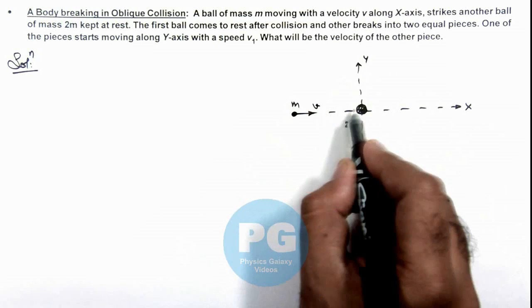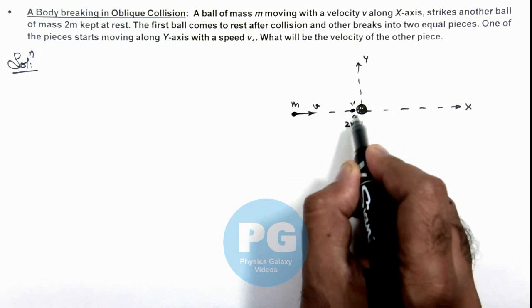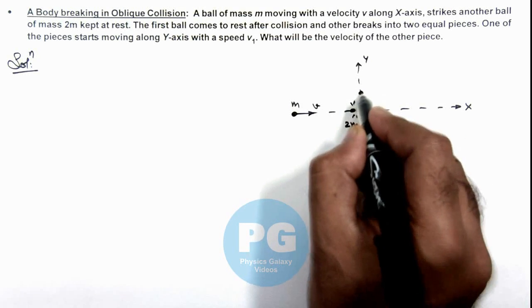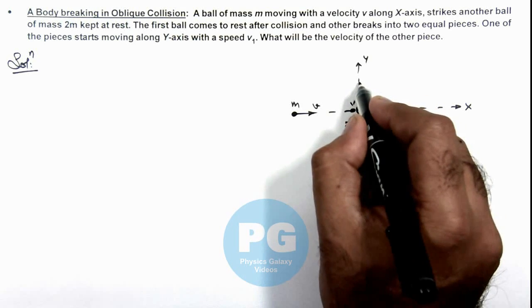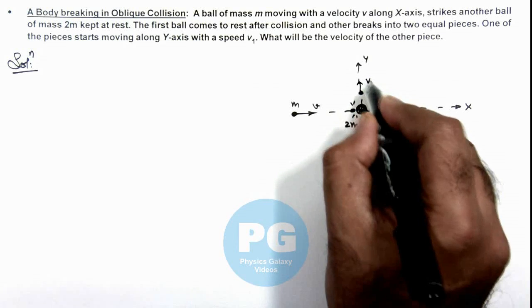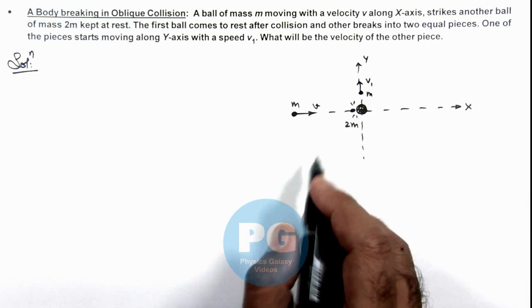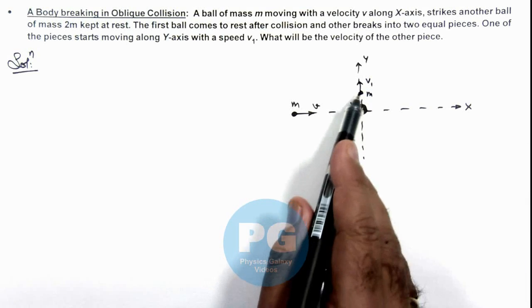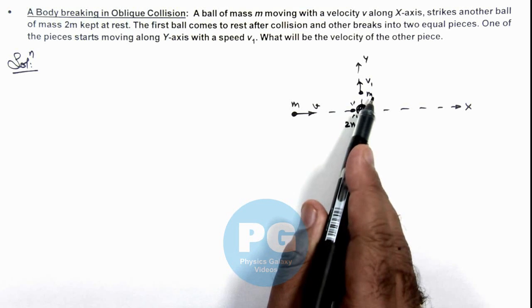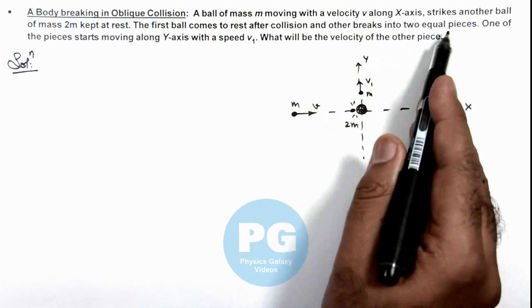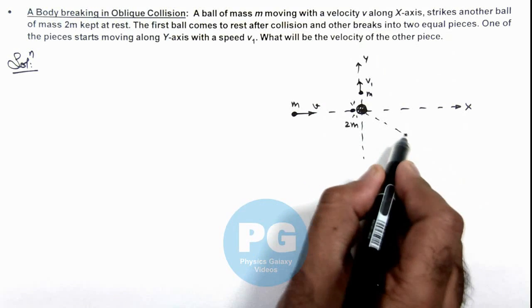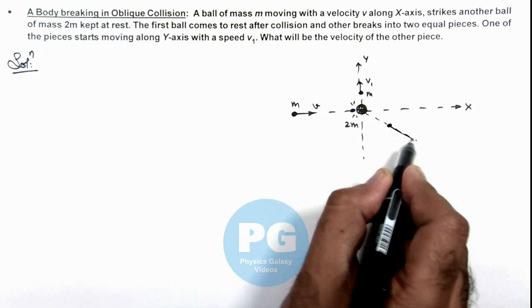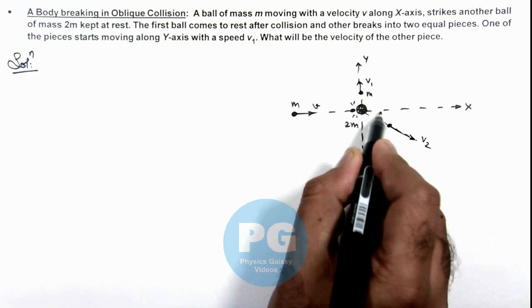When it strikes, after collision, a particle of mass m of this body moves in y direction with a velocity v1. And we are required to find the velocity of the other part which will also be of mass m because it is given that it breaks into two equal pieces. So to conserve momentum we can consider this would be going in this direction with a velocity v2 at an angle theta.